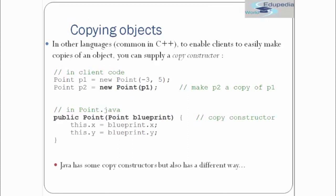First of all we see what is copying objects. In other languages, commonly in C++, to enable clients to easily make copies of an object you can supply a copy constructor. For example, we are creating an object of point. P1 is an object created using new point with parameters. Then we are creating another object P2 using our first object by passing it, so we use a copy constructor to make the copy of this object.